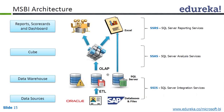Once integration is done using SSIS, we will prepare something called a cube. You might have heard about a cube in mathematics — we learn one-dimensional and two-dimensional things in geometry. A square has length and breadth; a rectangle has length and breadth. But a cube has length, breadth, and width — three things. A rectangle is two-dimensional, but a cube or cuboid is three-dimensional — x-axis, y-axis, and z-axis.